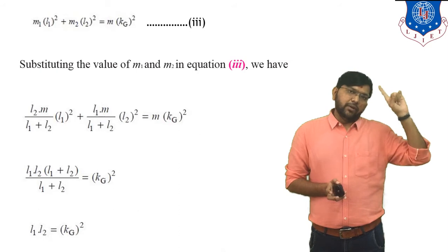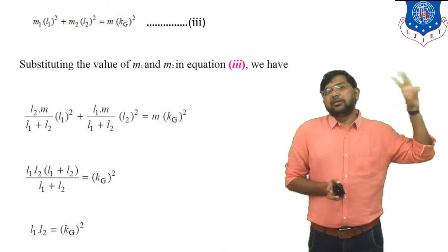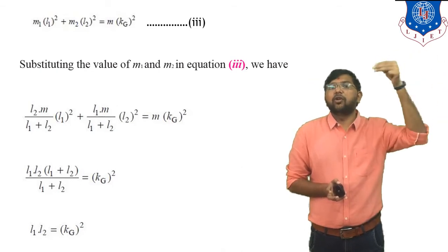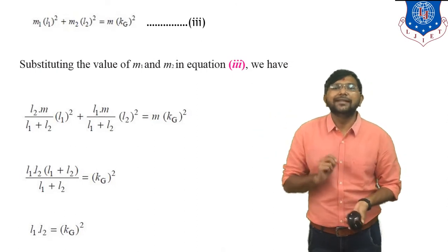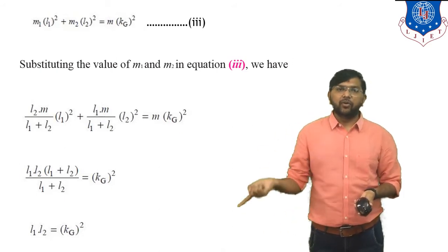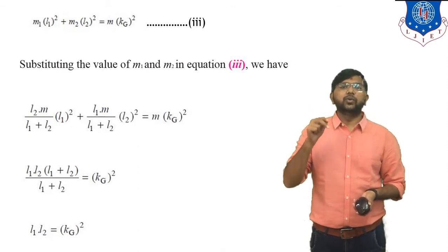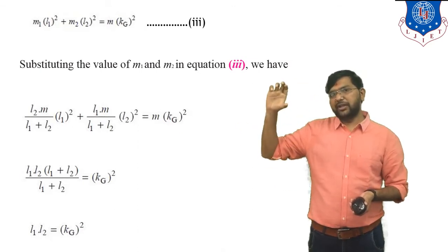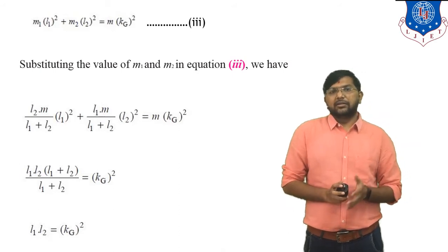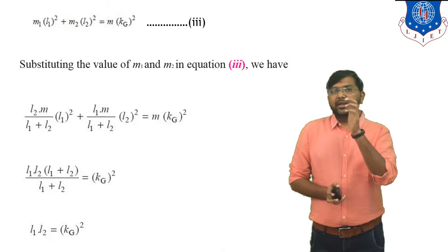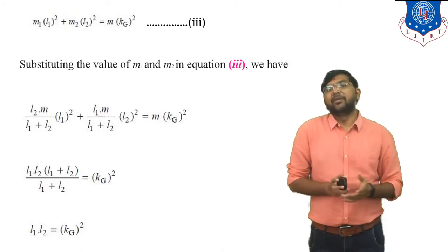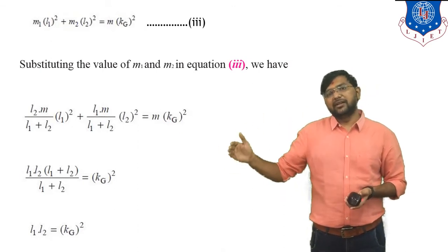To summarize, the three conditions are: (1) m1 + m2 = m, (2) m1×l1 = m2×l2, (3) m1×l1² + m2×l2² = m×kg². Based on these three equations, we derive the common condition: l1×l2 = kg², where kg is the radius of gyration, l1 is the distance of m1 from G, and l2 is the distance of m2 from G. From conditions 1 and 2 you can calculate the values of m1 and m2. These three conditions plus this common condition must all be satisfied for any body to be considered a kinetically equivalent system.